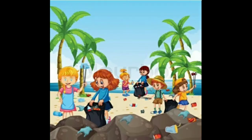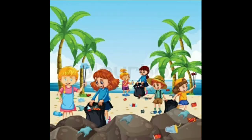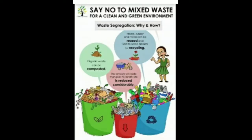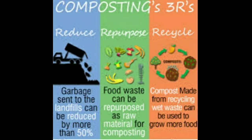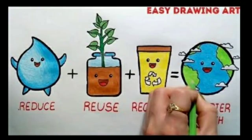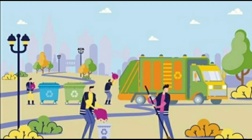Then, segregation of domestic waste into biodegradable and non-biodegradable by households, sweeping from gardens to be converted to compost, sewage treatment plants, and incinerators in group housings. Methods would involve governmental, social and individual initiatives.